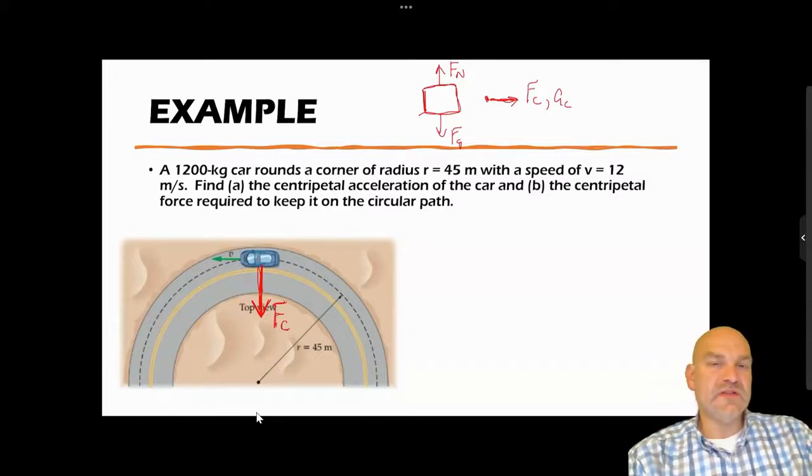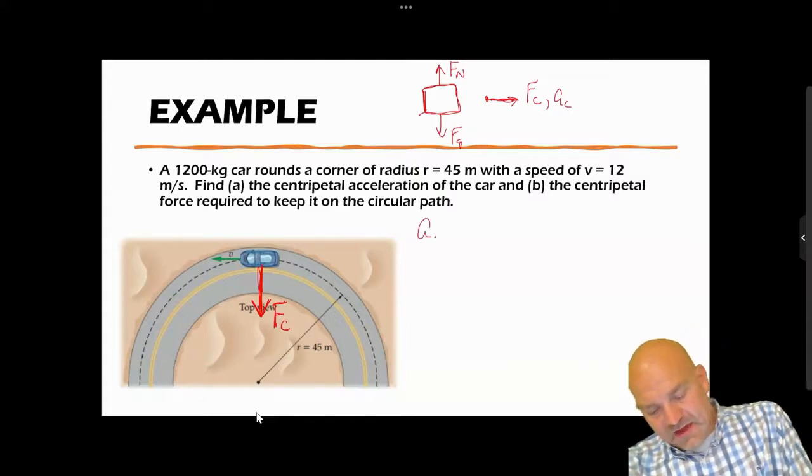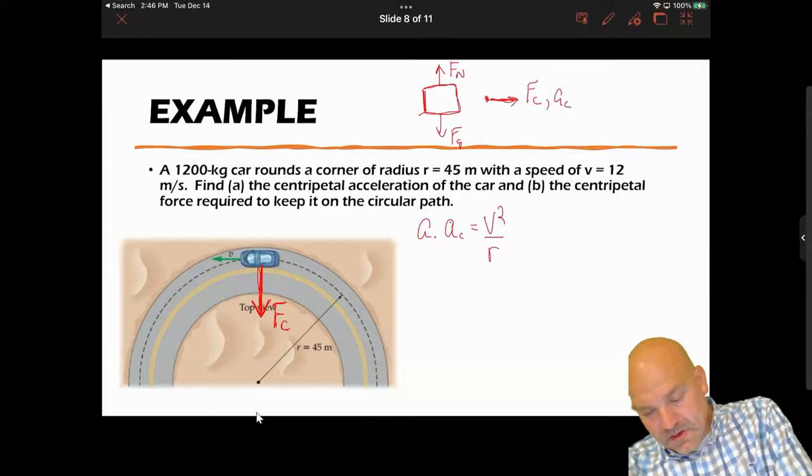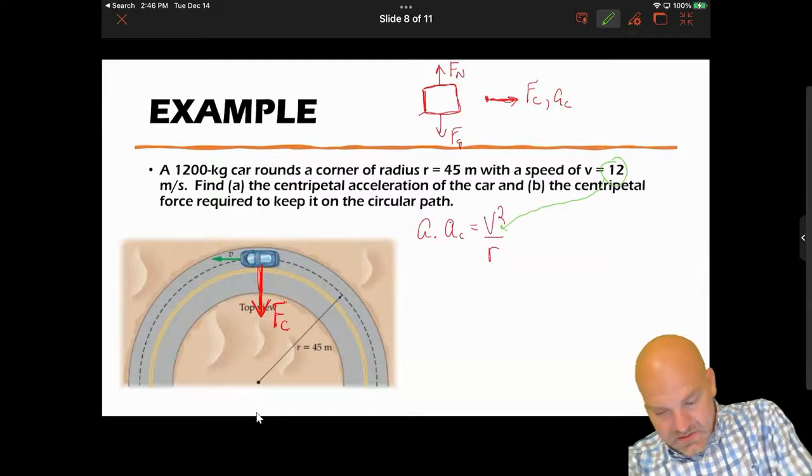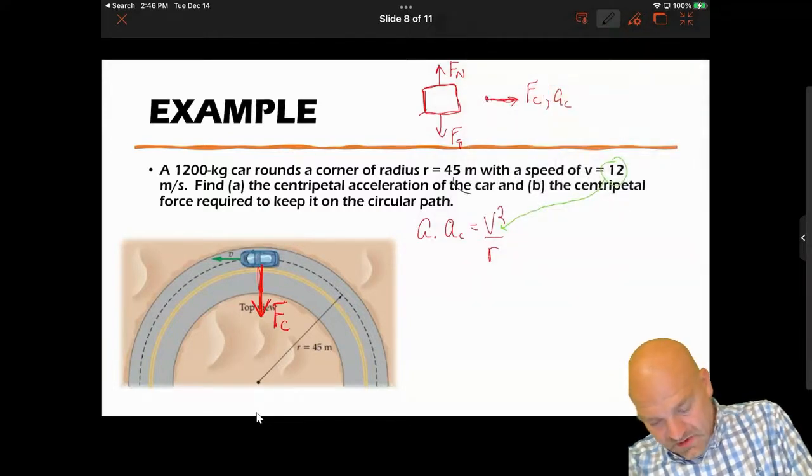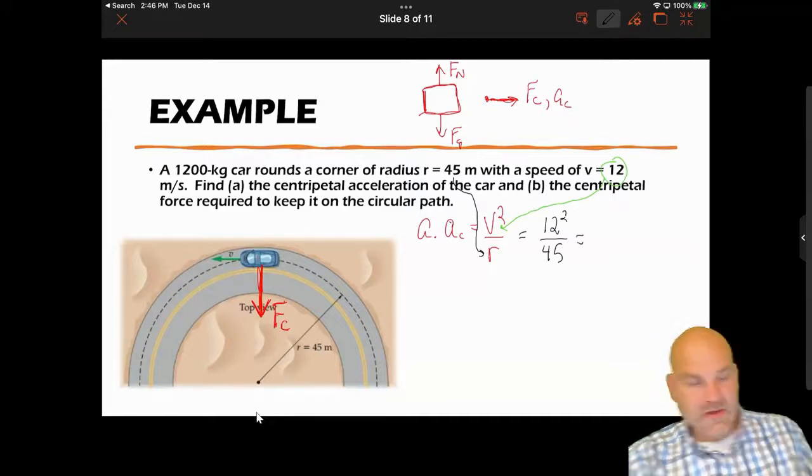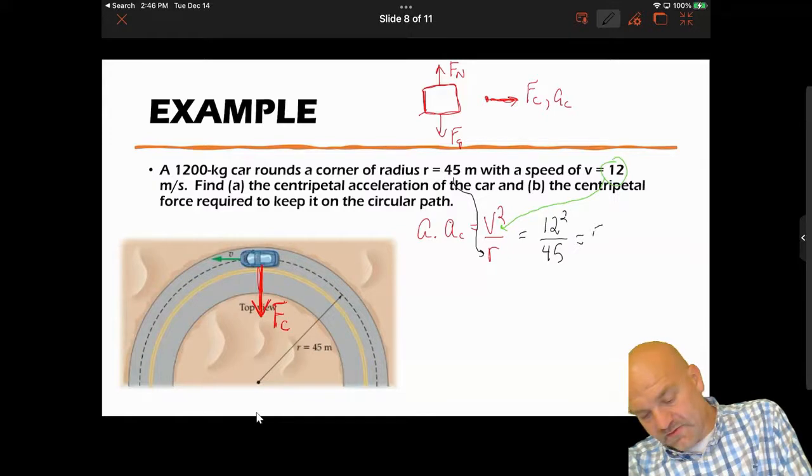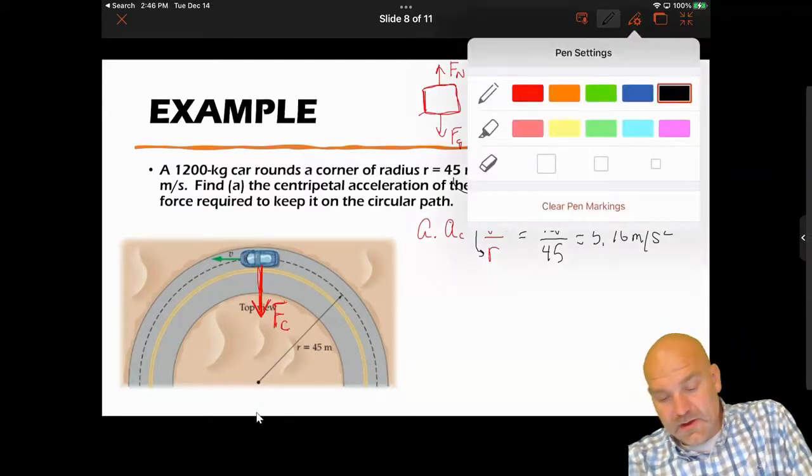But this is one that's not asking for friction. So we're just going to find a_c. So a_c is going to be the centripetal acceleration, so v squared over r. So my v is 12, so that's going to go there. My r is 45, so it's going to go there. So I'm going to say 12 squared divided by 45, and so 12 squared divided by 45 is 5.76 meters per second squared. So that's my centripetal acceleration.